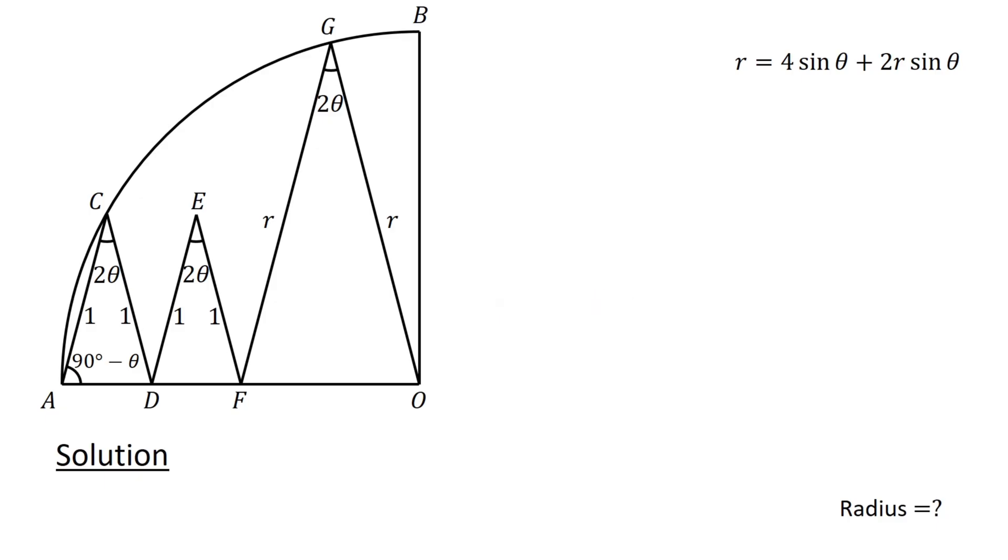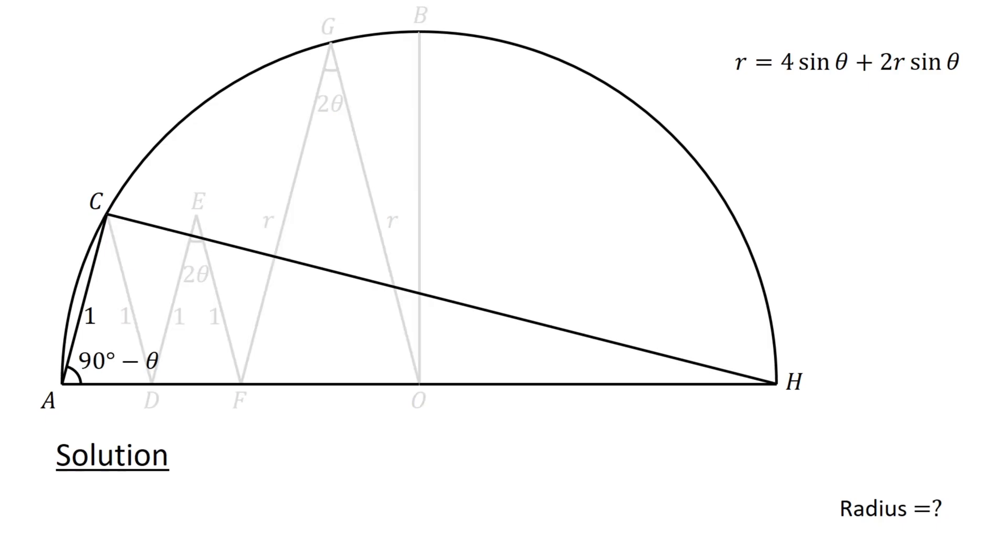Following this, extend the quarter circle to form a semicircle with AH as the diameter. Connect C to H, and then consider the lines AC and HC and the semicircle. Angle HCA is an angle in a semicircle. Recall that an angle in a semicircle is a right angle.